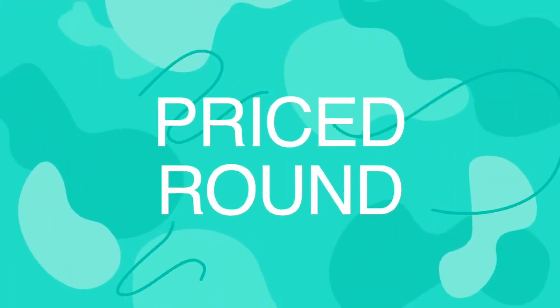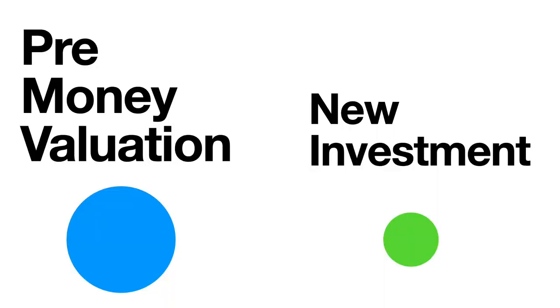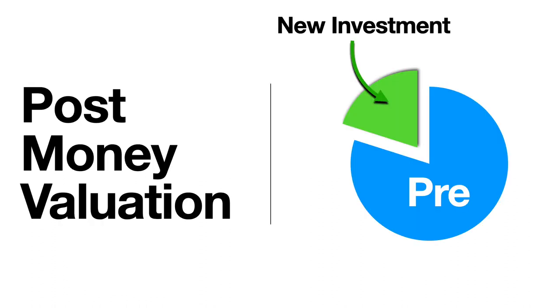As soon as startups start raising more capital — let's say a million dollars, two million, three million, four million or more — it starts to be in the best interest of both the startup founder and the investor to raise on a priced round. The idea of a priced round is that you're pricing your equity. You're putting a price on your startup's valuation and prescribing a specified amount of equity for that transaction, so there are no surprises.